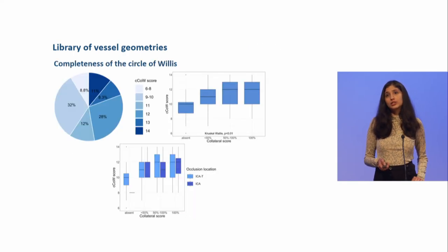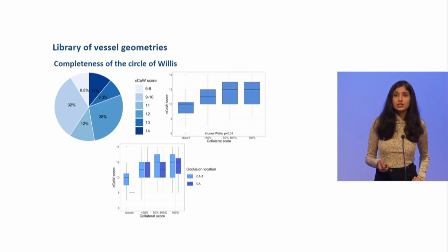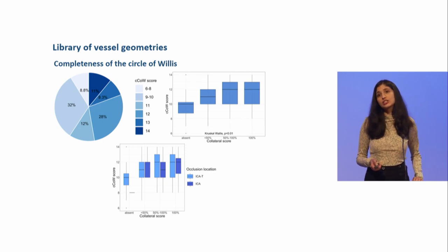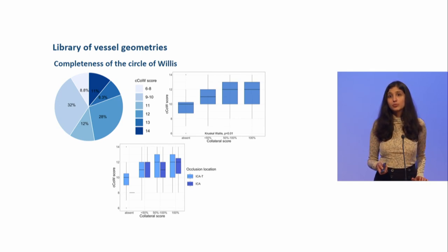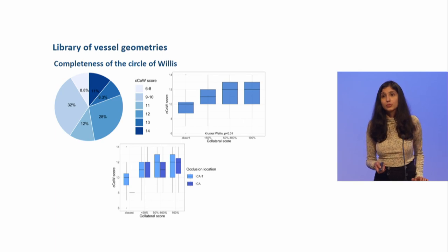We also assessed the completeness of the Circle of Willis based on the baseline CT angiography scans, and in particular, we developed a completeness of Circle of Willis score, which was a 7-point scale. We found that there was an association between a higher completeness of the collateral score and the normal collateral score, which represents more leptomeningeal or distal artery connections between the major intracranial arteries. This shows that there was an association between the primary collateral network and the secondary collateral network within the brain.